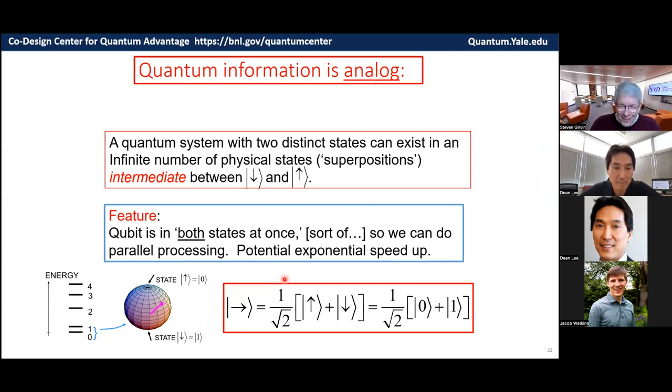So, the fact that quantum information can be in these superposition states is a feature. There's a sense, not strictly correct, but it's sort of true that the qubit can be in both states at once, both zero and one. And that can lead to, in some cases, to exponential speed up in the processing of information. That's a feature.